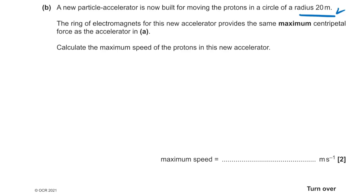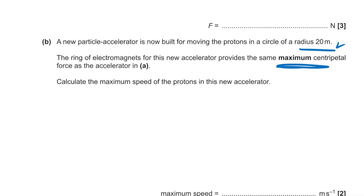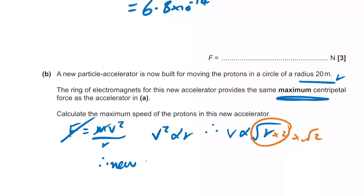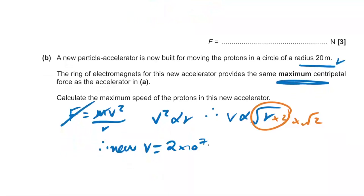A new accelerator has doubled the radius but the same maximum centripetal force and same proton mass. Since F = mv²/r is constant, v² ∝ r, so v ∝ √r. Doubling r multiplies v by √2, giving a new maximum speed of 2×10⁷ × √2 = 2.8×10⁷ m/s.